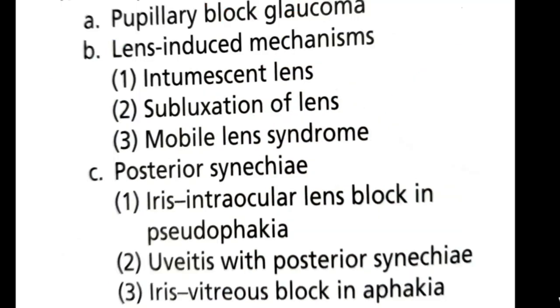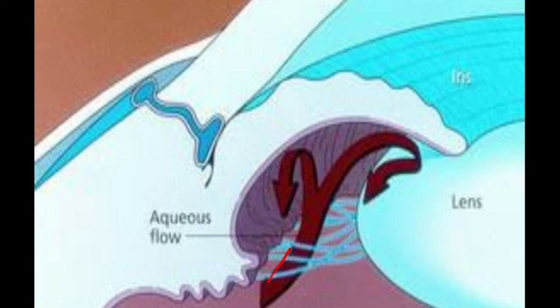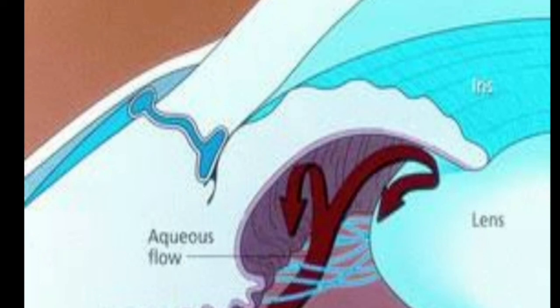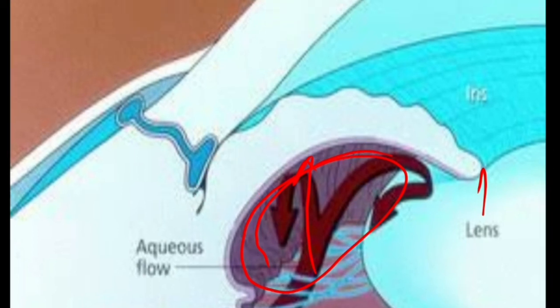In the pushing mechanism, something from behind pushes the iris anteriorly — this can be with or without pupillary block. Normally, aqueous passes from the posterior chamber through the pupil into the anterior chamber. In pupillary block, aqueous cannot pass from the posterior chamber to the anterior chamber because of opposition between the iris and lens — as in intumescent or subluxated lens — trapping aqueous in the posterior chamber, which pushes the iris forward, leading to angle closure.